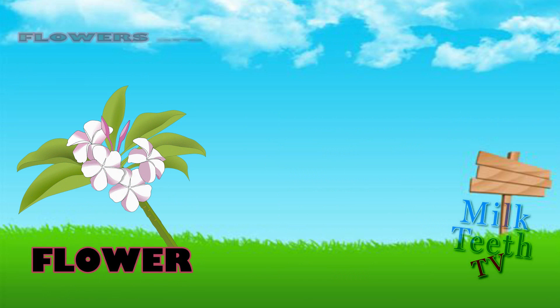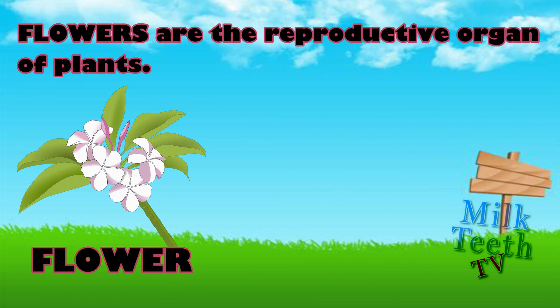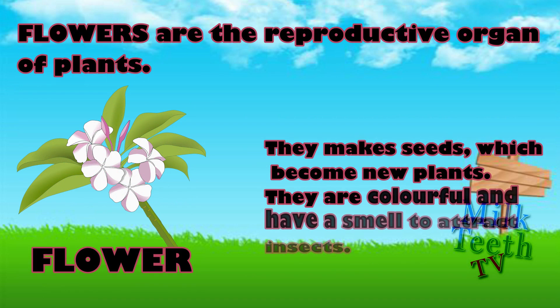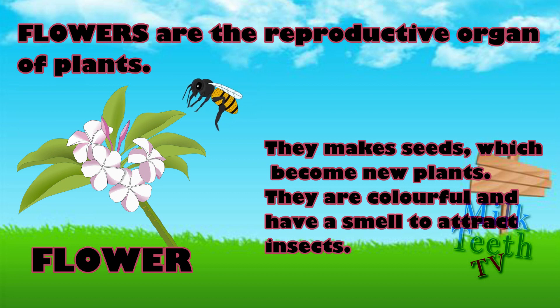Flowers. Flowers are the reproductive organ of plants. They make seeds which become new plants. They are colorful and have a smell to attract insects which help in pollination.